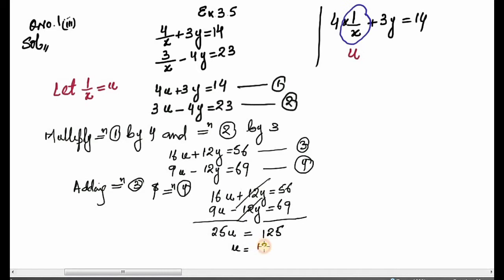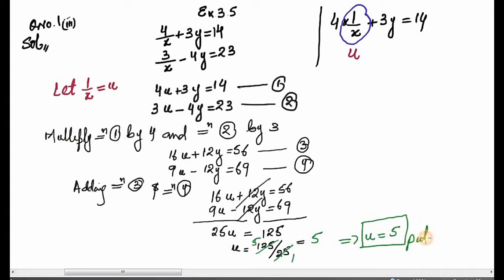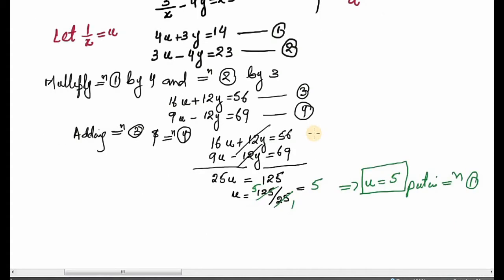So 25u = 125, divided by 25, gives u = 5. Now we substitute this u value back into Equation 1. Our Equation 1 is: 4u + 3y = 14. I will put u = 5 here: 4 × 5 + 3y = 14, which gives 20 + 3y = 14.